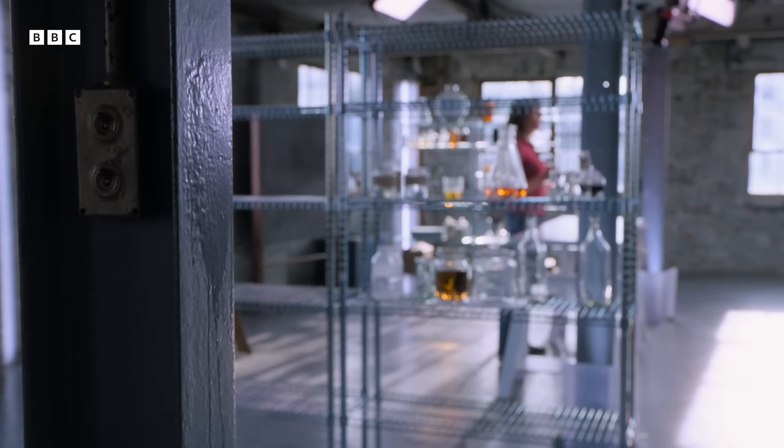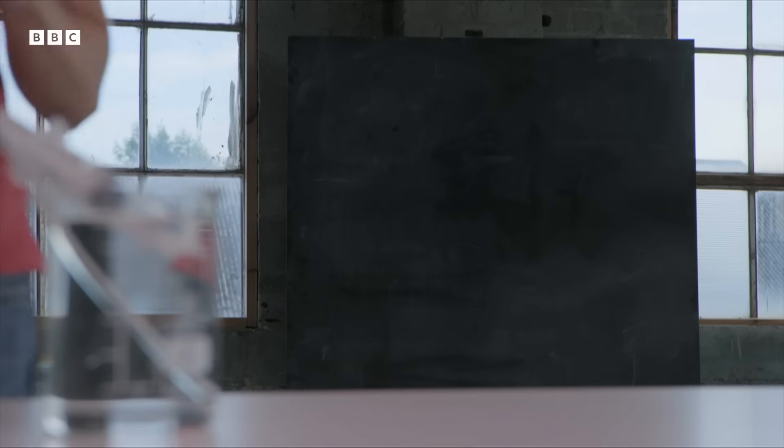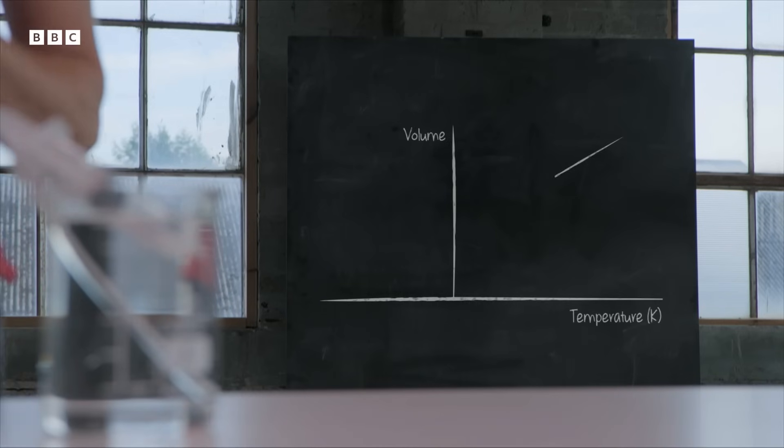So the first scientists who saw this kind of relationship did something very straightforward. They plotted a graph that showed temperature against volume. And at the higher temperatures the volume was higher. And as you go down to the lower and lower temperatures the volume decreases. And then there's a question.